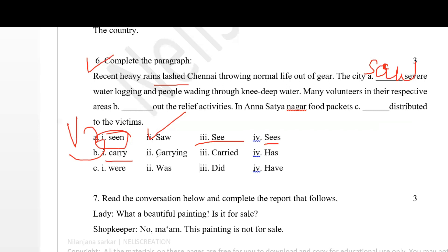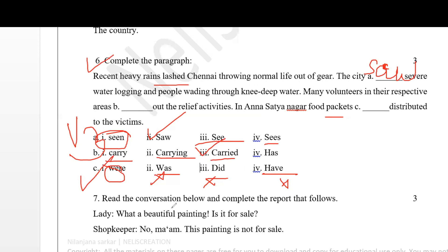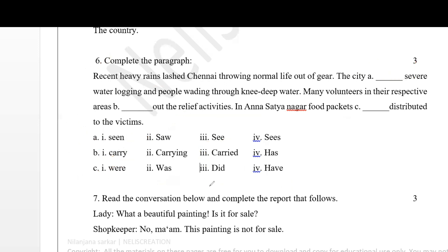Next: 'In Anya Satya Nagar food packets [were/was/did/have] distributed.' 'Was' is a singular verb but 'packets' is plural, so 'was' is wrong. 'Did distribute' is grammatically incorrect structure. 'Have distributed' is also wrong. So obviously we go with 'food packets were distributed.' We are done with this question - let's move on to the next one.